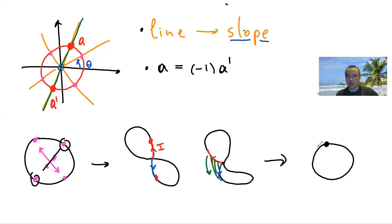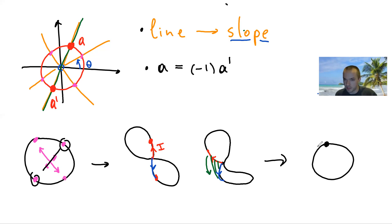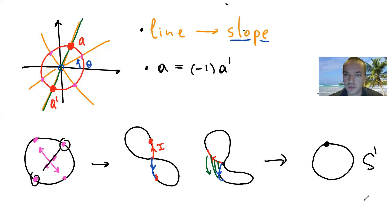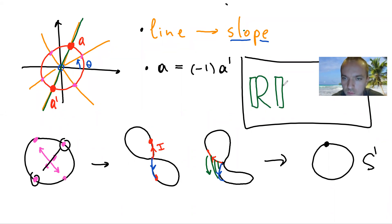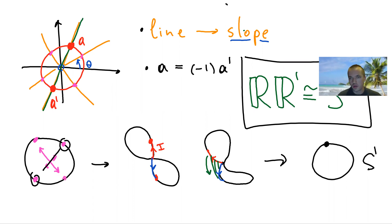After this gluing, we get a circle. We started with the unit circle where diametrically opposite points lie in the same equivalence class, and after gluing we get S¹. So the final answer through this topological picture is that RP¹ is diffeomorphic to S¹ — real projective space in the case n equals one is just the unit circle.